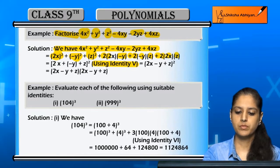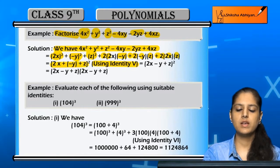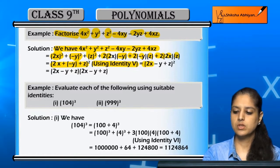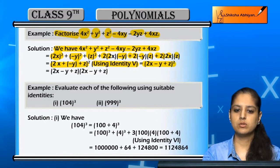So we can use this identity as 2x plus -y plus z whole square, which equals (2x - y + z)².